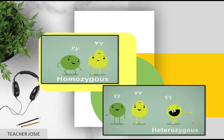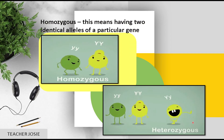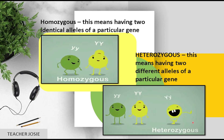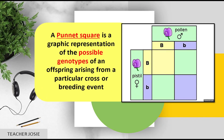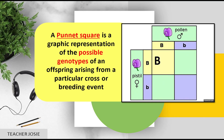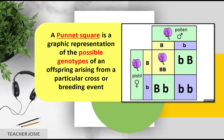Let's proceed. Homozygous means having two identical alleles of a particular gene. Heterozygous means having two different alleles of a particular gene. A Punnett square is a graphic representation of the possible genotypes of an offspring arising from a particular cross or breeding event. Reginald Punnett is the proponent of the Punnett square.